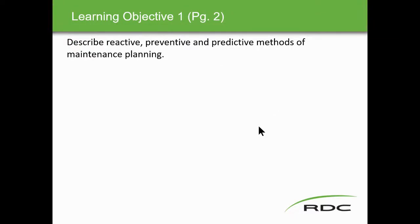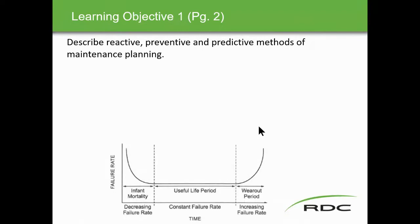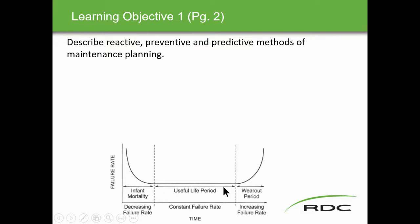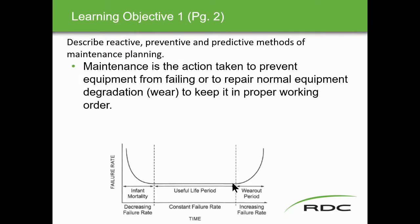Learning objective: describe reactive, preventive, and predictive methods of maintenance planning. On this chart, along here, we have the failure rate — this is on page two — and then this is infant mortality. This means that if you get a piece of equipment in there and it fails right away, simply because it wasn't oiled or it didn't work properly. We call this infant mortality when you've got a piece of equipment and it fails right away. This is a normal constant failure rate of a useful period of life right here. And then at the end, we have the wearout period. Maintenance is the action taken to prevent equipment from failing or to repair normal equipment from degradation of wear to keep it in proper working order.